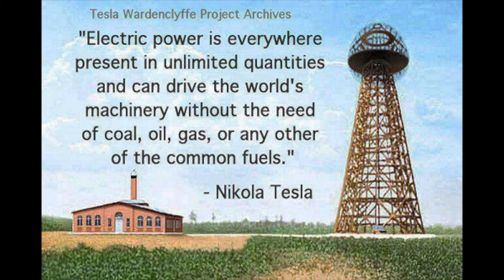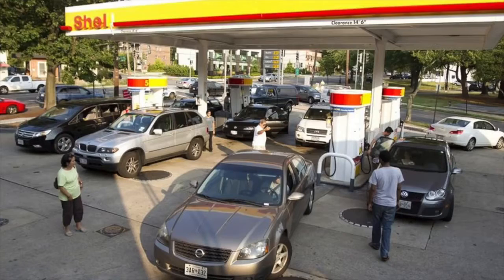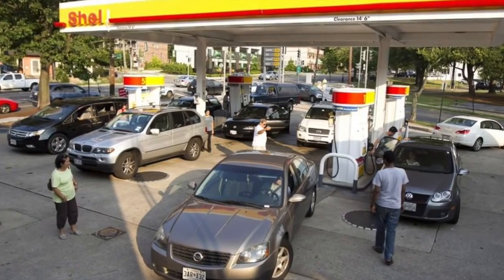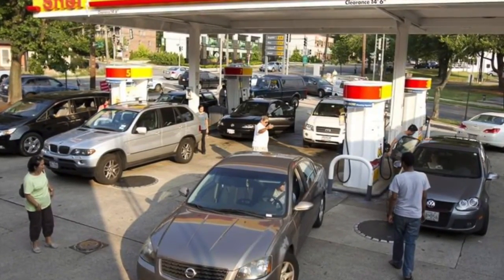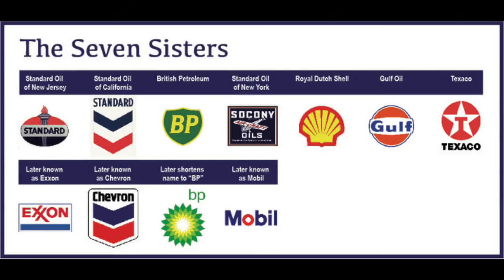Because remember they own all of the energy companies. 9/11 was a false flag so that we could go in for two reasons: one to go in for oil and two to set up a central bank. The thing is we don't need coal, oil, gas, or any of the common fuels if there's free energy that we can manipulate in our favor in order to obtain free energy. But obviously they won't allow that to happen because we're just stupid little people who need to buy everything like consumers so that they can build their empire off of our labor, hiding free energy from us so that we can't go out on our own and do our own thing. We're dependent on their energy.